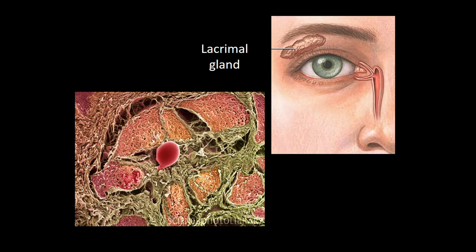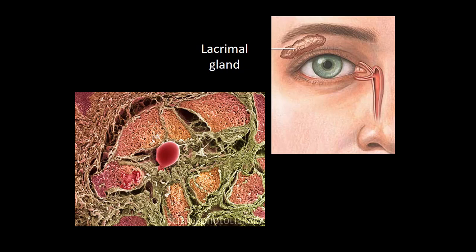The eye needs to be kept moist and clear of debris, and that's the job of the lacrimal gland, located right above the eye, which produces tears. These tears flow over the eye and down into the tear ducts, then into the tear sac, and ultimately into the nasal cavity. This happens constantly to bathe and keep the eyes moist and wash away debris. Because tears flow into the nasal cavity, that's why your nose gets stuffed up when you cry. Babies can't produce tears until they are at least two weeks old.